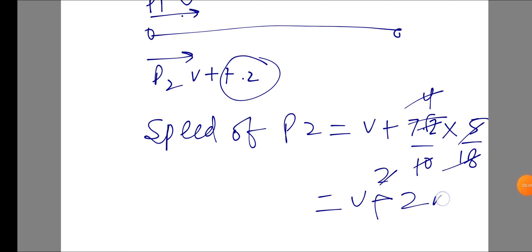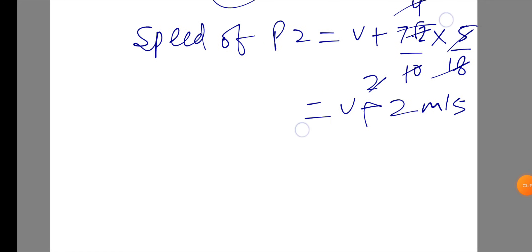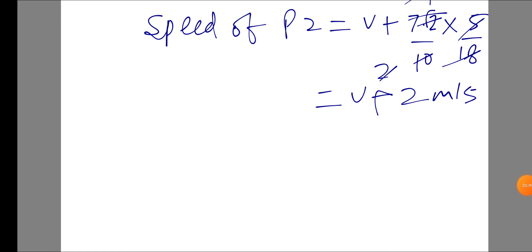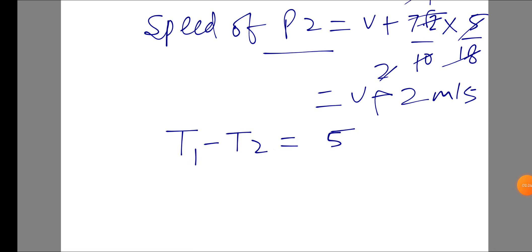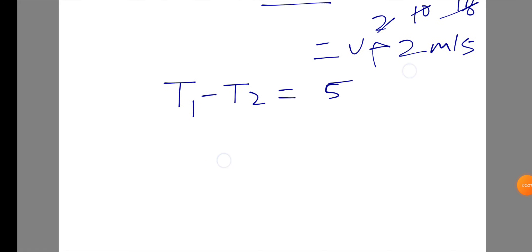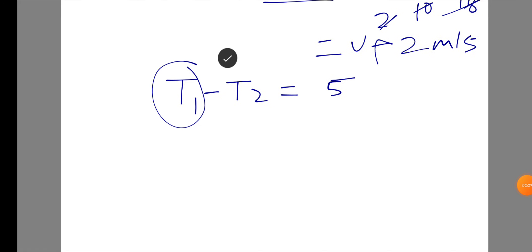So this gives us V plus 2 meters per second. Now we set up our condition: the time difference is T1 minus T2 equals 5 seconds. The difference is 5 seconds. T1 is more time because Person 1's speed is less, so Person 1 takes more time.